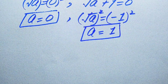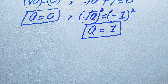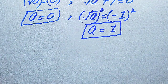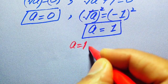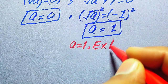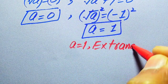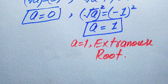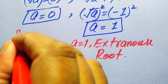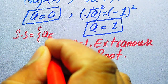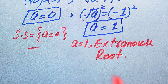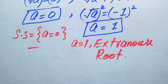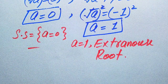As already verified in the first method, A equals 1 does not satisfy our given question statement, so A equals 1 is the extraneous root of the given equation. The solution set of this problem is A equals 0. This is the final answer. Thank you so much for watching this video — please subscribe to my channel for more exciting videos.